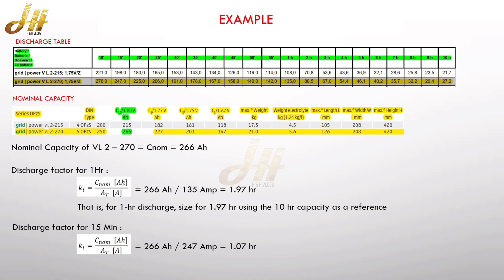And similarly, we can also check the discharge factor for the 15th minute. Similarly, 266 Ah divided by 247, which is 1.07. So this is how the KT factor is calculated.